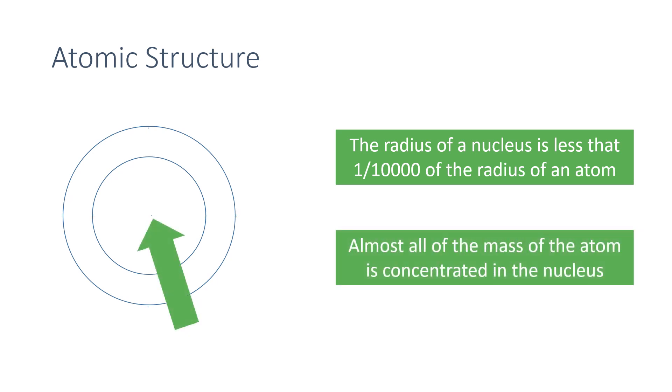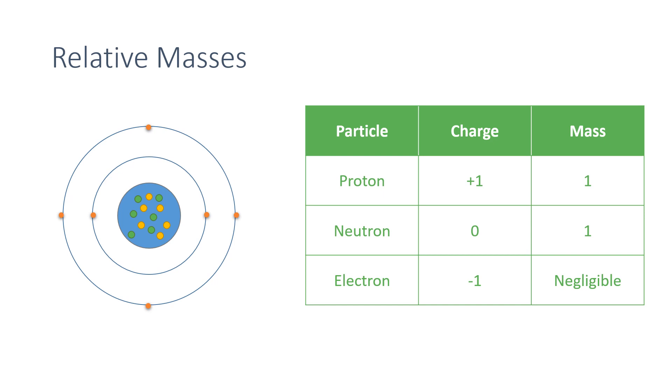You need to know the relative masses of these subatomic particles. The positively charged proton has a relative mass of 1. A neutron has a relative mass of 1, and an electron, the mass is so small that we say is negligible.